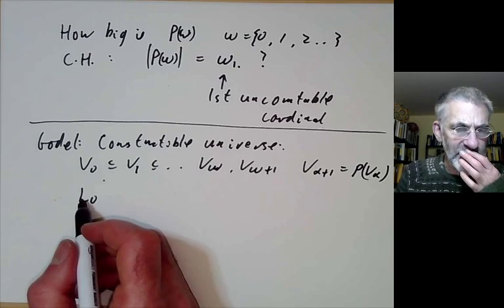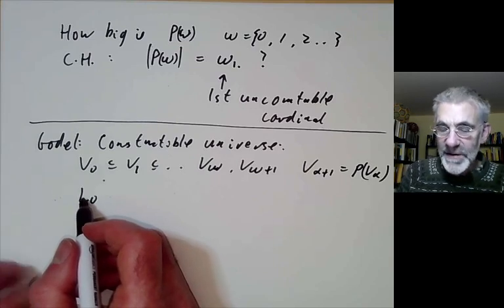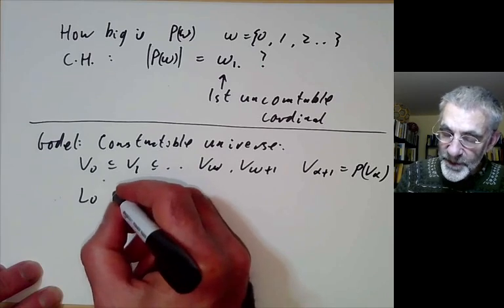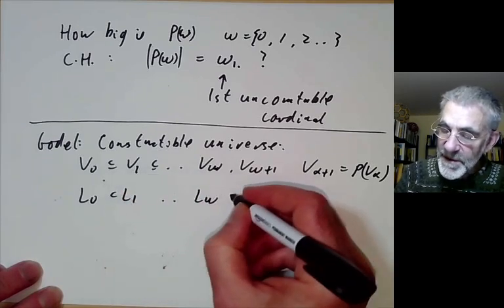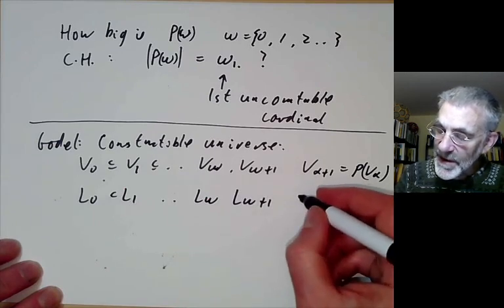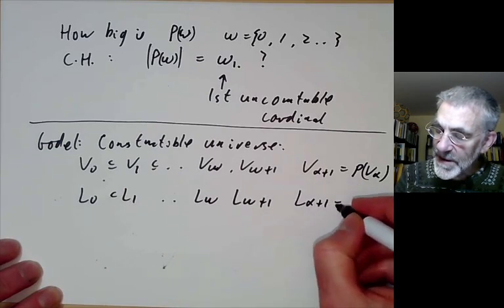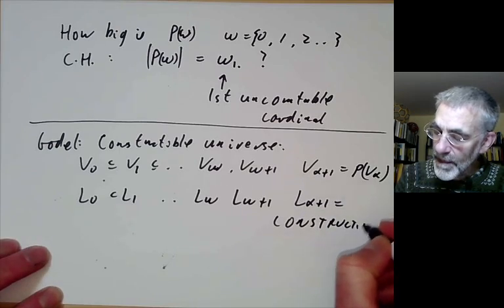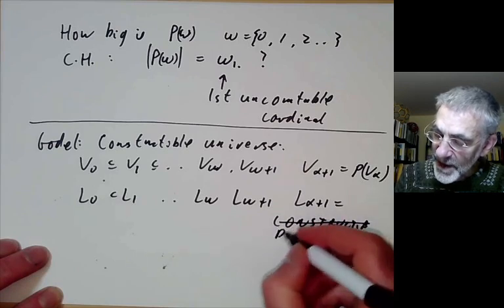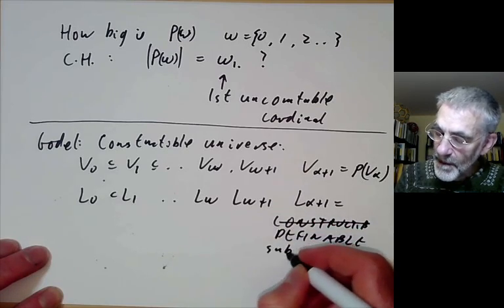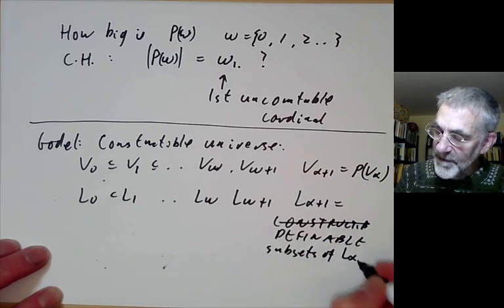Godel's constructible hierarchy usually denoted by L. The letter L actually stands for law because you know Godel thought that the stages were constructed by looking at laws. And it's constructed a bit like the von Neumann hierarchy except that L of alpha plus one is equal to the constructible, so not constructible, definable subsets of L of alpha.